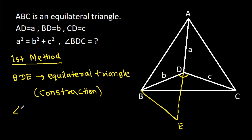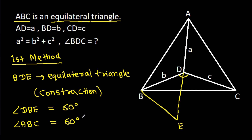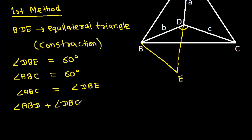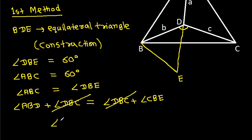Then angle DBE will be 60 degrees, and since ABC is also an equilateral triangle, angle ABC will also be 60 degrees. So we get angle ABC equals angle DBE, and since angle ABC equals angle ABD plus angle DBC plus angle CBE, angle DBC cancels, giving us angle ABD equals angle CBE.